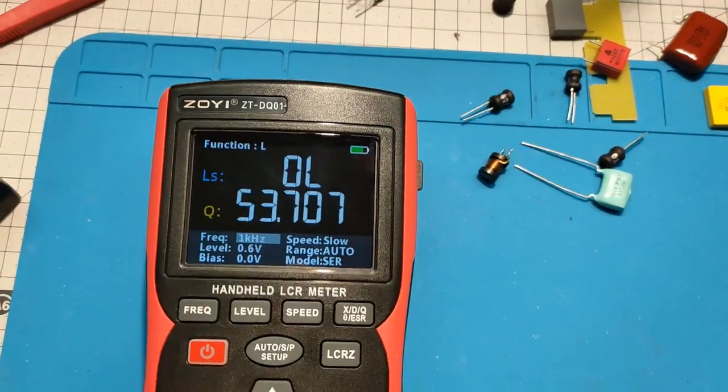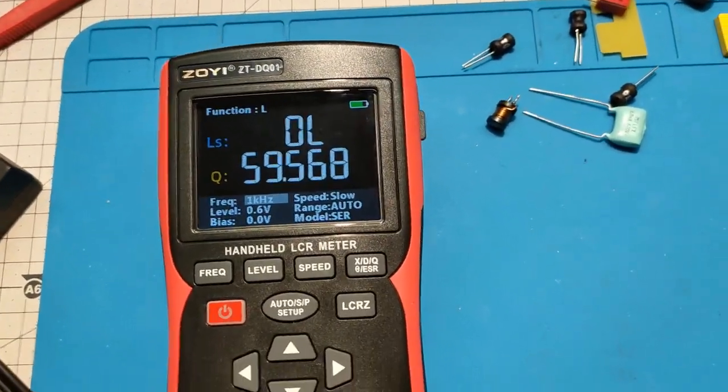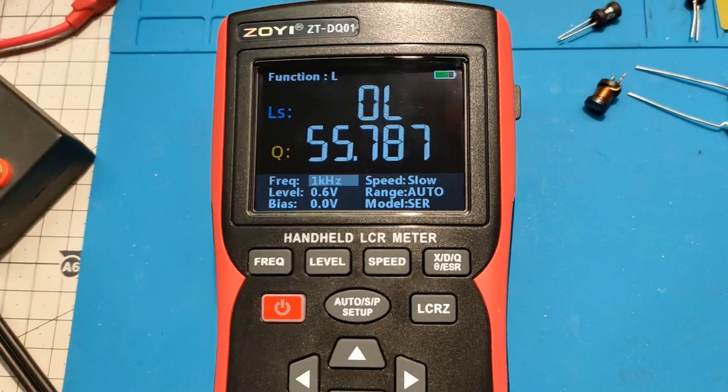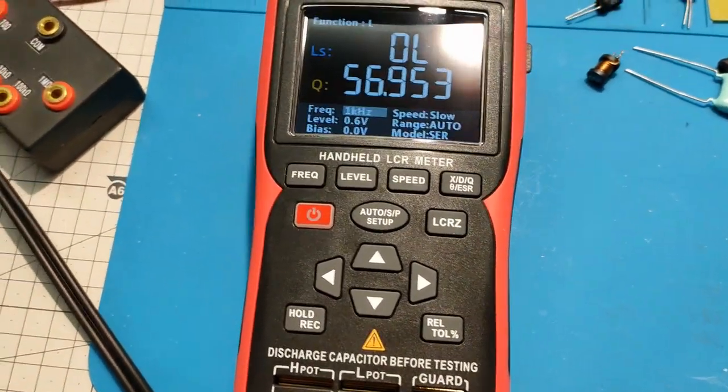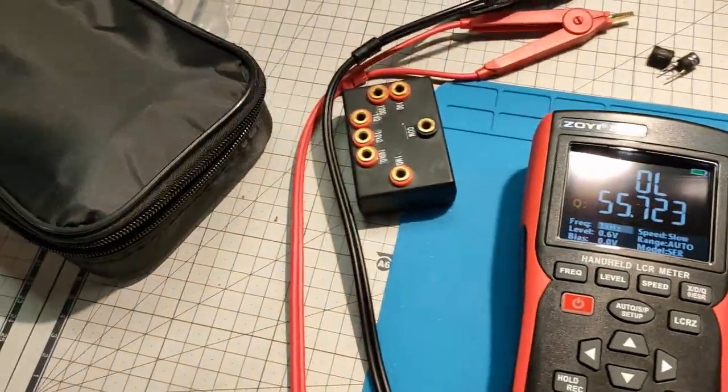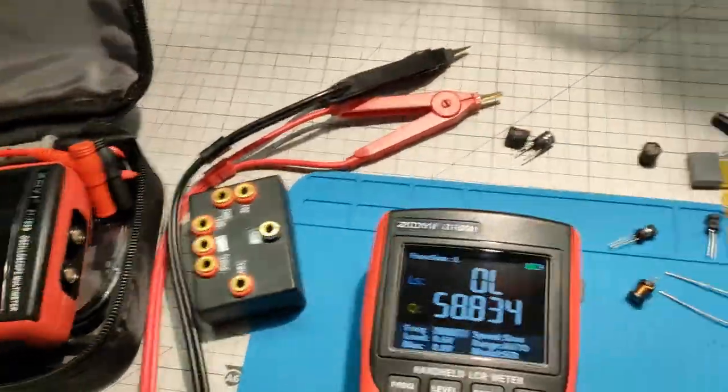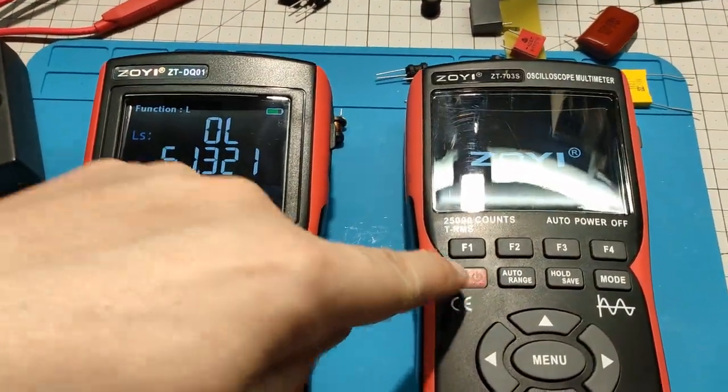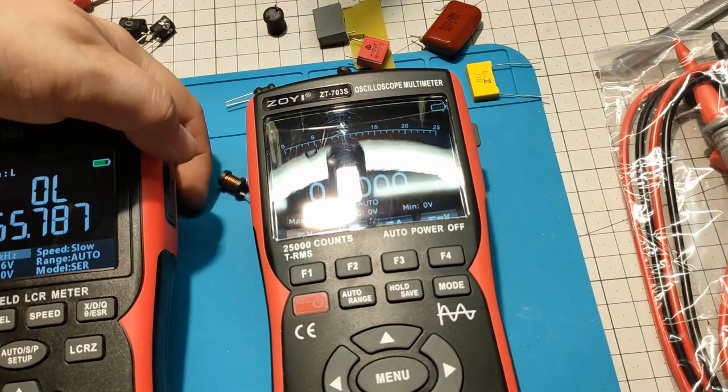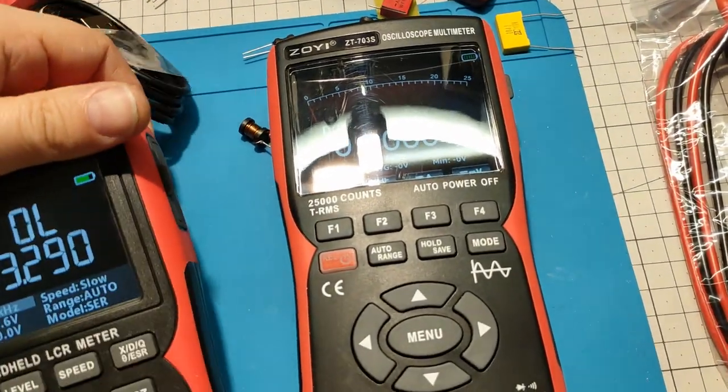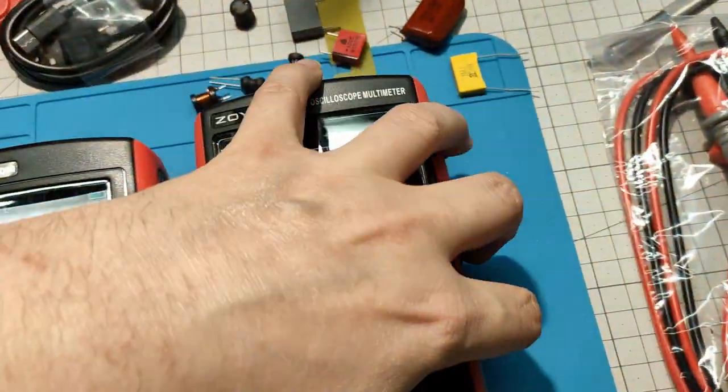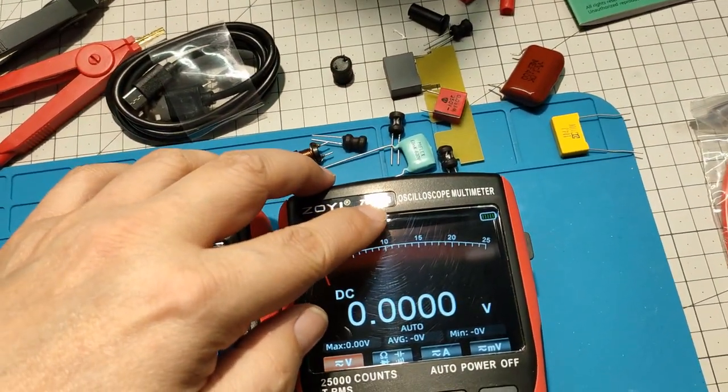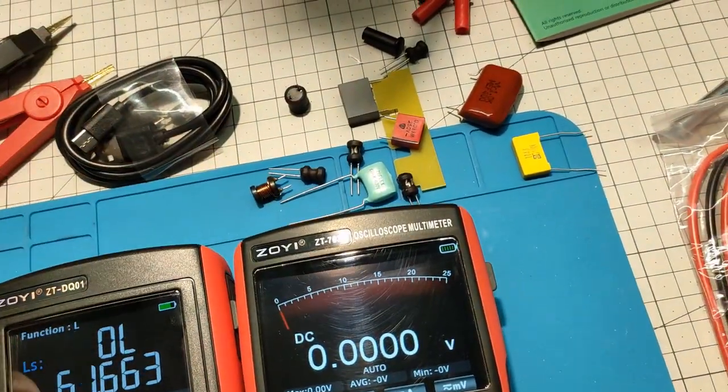I may also compare it to the scope meter if I manage to open it with my left hand, which is not easy. Sorry, I'm not looking through the camera, that's why sometimes I forget to point the camera in the right direction. So as you can see the case is the same, actually the display is slightly smaller. It's the same display, it was used in the ZT-702S model.